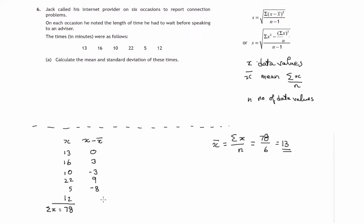And it says we need to add the squares of these deviations. So the next column will be these deviations squared. 0 squared is 0, 3 times 3 is 9, negative 3 times negative 3 is 9, 9 times 9 is 81, negative 8 times negative 8 is positive 64, and negative 1 times negative 1 is 1. So we need to find the sum of the squares of these deviations.